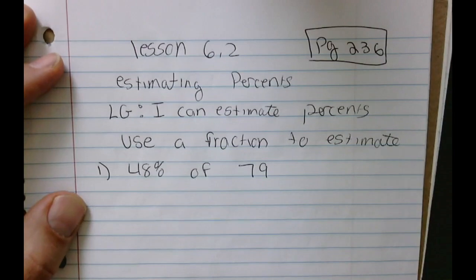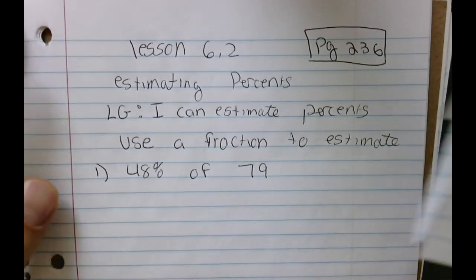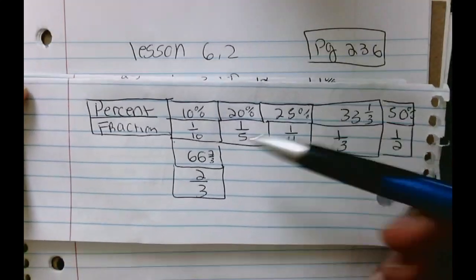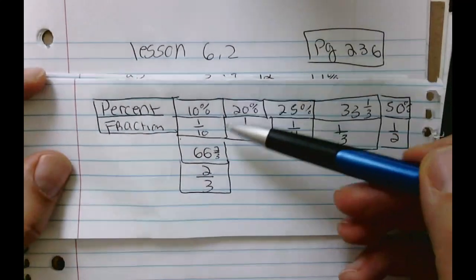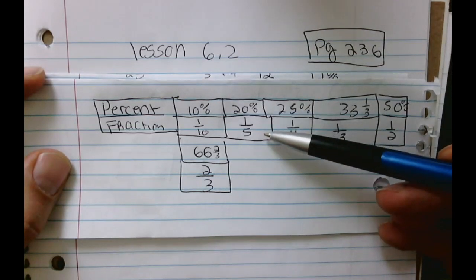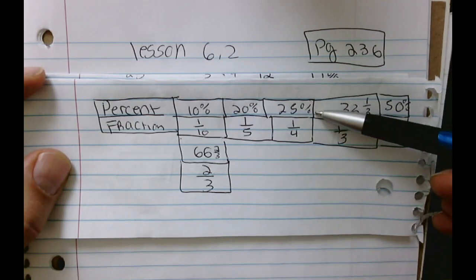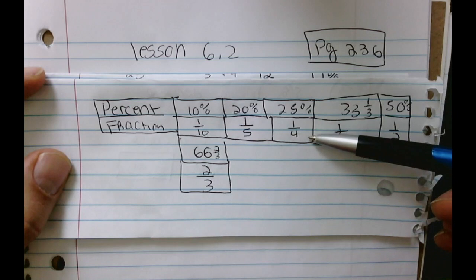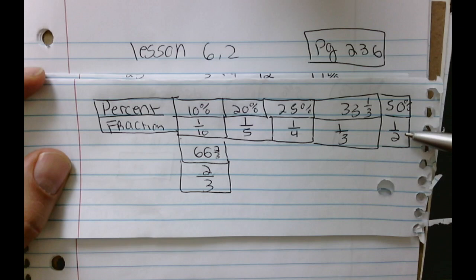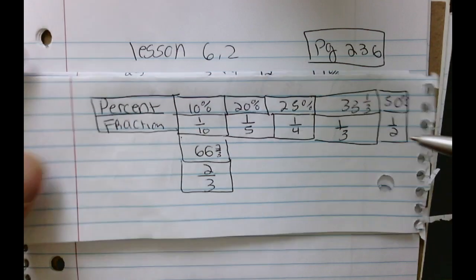So it's really important to understand some essential baseline fractions before you start. 10% is equivalent to 1 over 10. 20% is equivalent to 1 over 5. 25% is equivalent to 1 fourth. 33 and 1 third percent is equivalent to 1 third. And 50% is equivalent to 1 half.